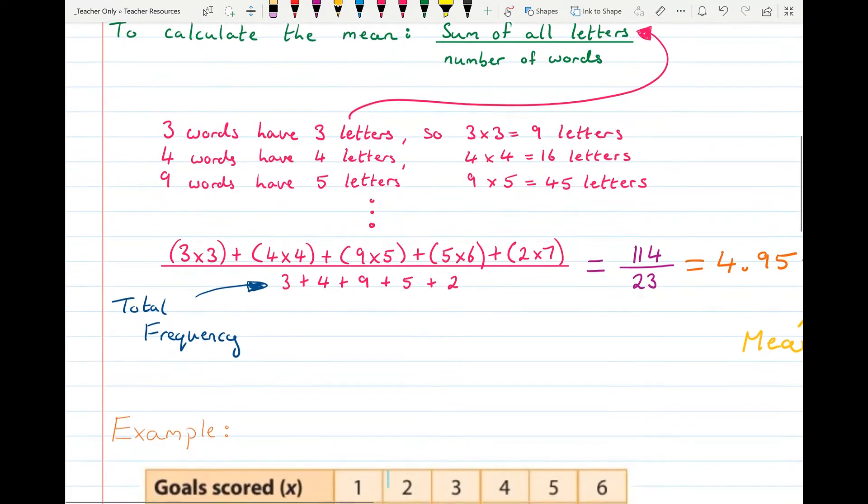And I have that done for us here so it was three times three, four times four, nine times five, five times six, two times seven. You add them all up and you get 144.